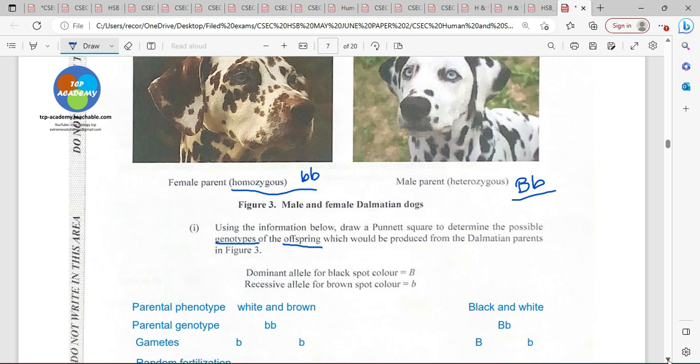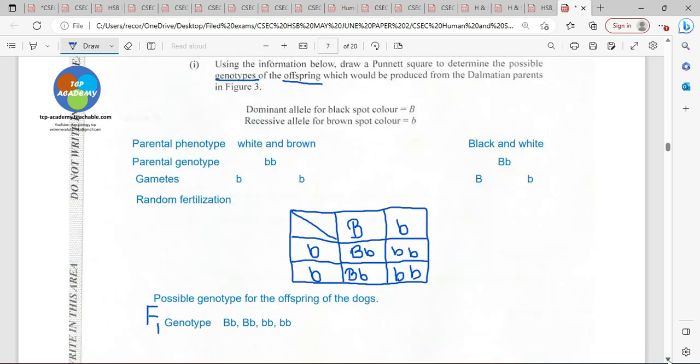We can also determine from this that this is inheritance of dominance. Because if the dominant allele is expressed at all in the genotype, then the phenotype will be that of the dominant allele as is shown in the black. But there is no need to define the alleles, as they are already defined here. So all we need to do to get into solving this, we need to look at our parental phenotype. We have a white and brown dog and a white and black dog.